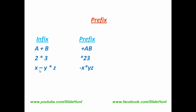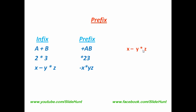Let's see another example: x minus y star z in infix can be written as minus x star yz in prefix. Since multiplication has higher precedence than subtraction, we perform y multiplication z first, which in prefix becomes star yz. We can add parentheses in the intermediate state and delete them at the end of the conversion. Now the subtraction operator has two operands: x and this expression. After converting, we get minus x star yz. Remove the parentheses and this is the final result.